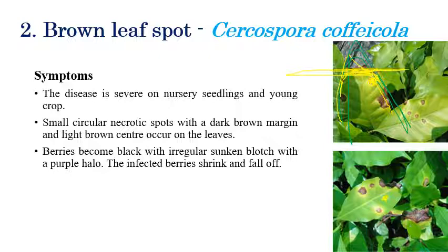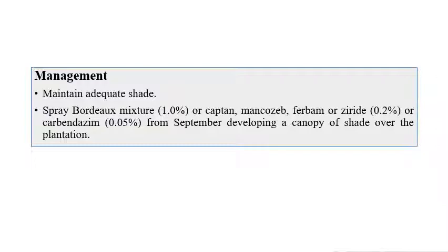This disease is quite common in nursery stages as well as in implants. In later stages, the berry size will be reduced and black color shrinking of berries can be observed. In severe stages, the berries will fall down. The brown color spots coalesce into big spots, and on the margins a cigar or smoking-like appearance can be seen. For management: maintain adequate shade, and spray Bordeaux mixture at 1%, Captafol, Mancozeb, Ferbam, or Carbendazim, especially in September. Developing a canopy shade over the plantation is also very efficient.